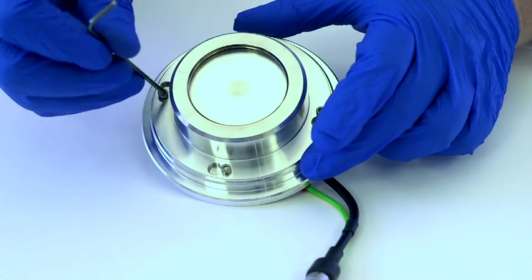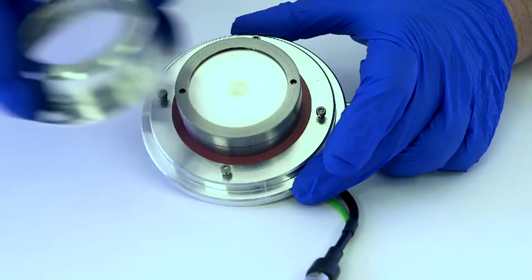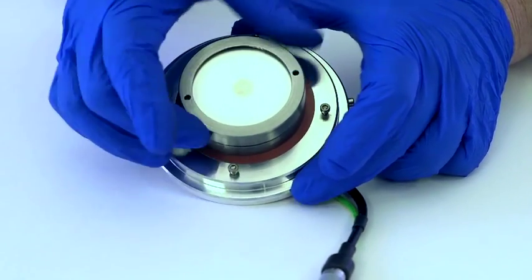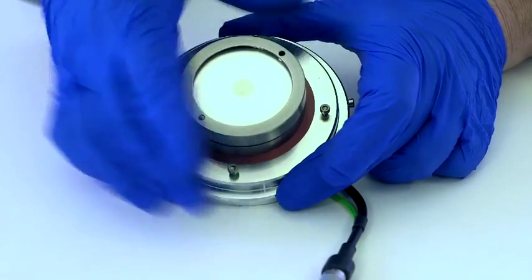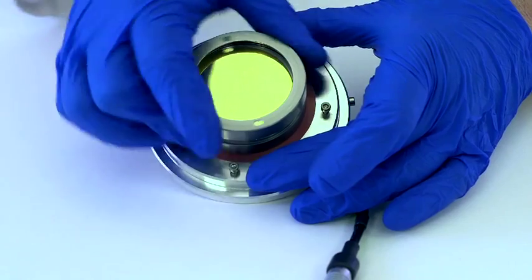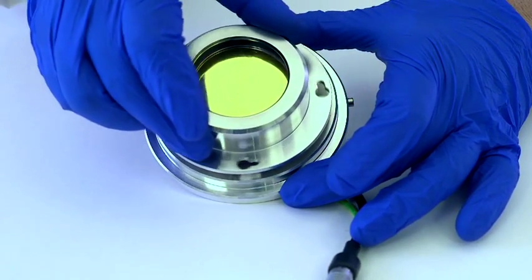The Q150TES is fitted with a sputter insert and a chromium target as standard, but is capable of sputtering a full range of oxidising and noble metal targets to meet the most exacting requirements, from routine gold coating to high-resolution chromium or iridium coatings required by today's high-performance field emission electron microscopes.